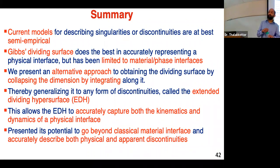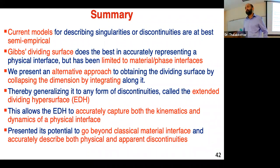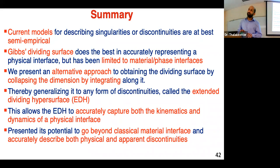A follow-up question: is there quantitative information about the limitations? Specifically, how narrow does the diffuse region need to be relative to other scales in the problem for the surrogate description to be valid? The speaker notes the research has not yet quantified the errors precisely, but the foundation is that, if done properly, all relevant quantities are conserved and the model should physically represent the system. The errors in practice come from how accurately you can conserve those quantities numerically.